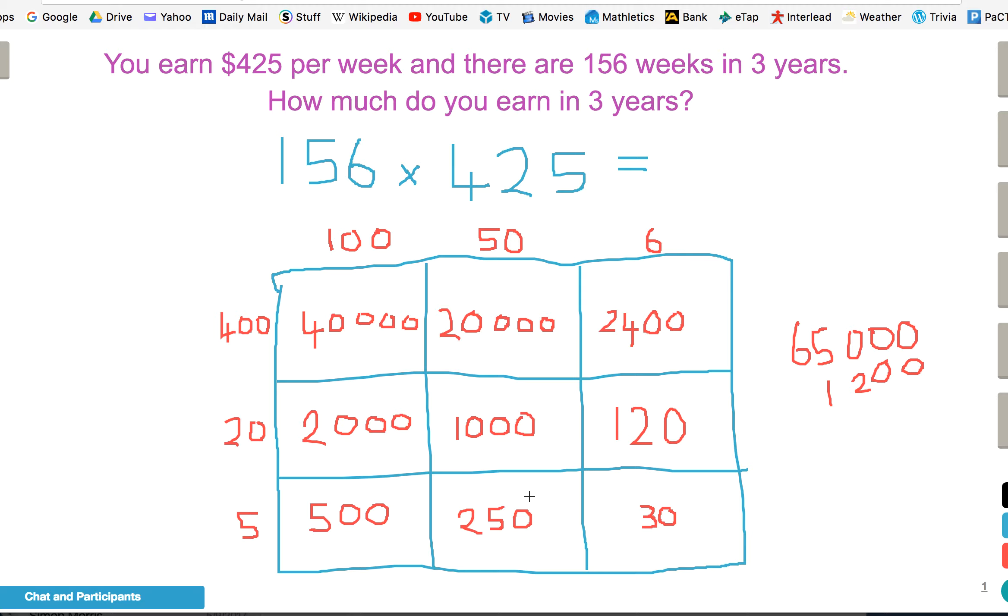And then I add up the tens. I think there's just 20 here and 50 is 70, and then 30, so that's going to be 100. So that's my thousands, my hundreds, and my tens. Adding that up: 65,000, 66,000, plus 200 and 100. That's $66,300 is how much you'd earn in 3 years.